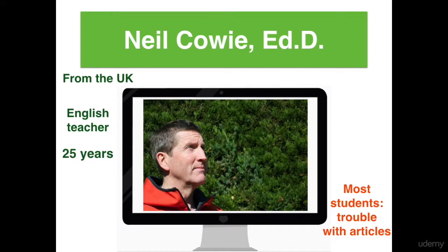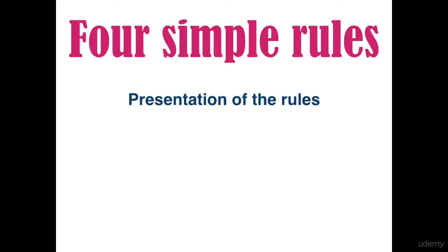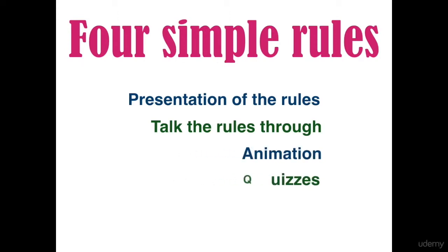So we hope that the materials in this course will help you make better informed choices about what article goes with what noun. In this course, we will present four main rules about article use. In order to make them as accessible as possible, we'll present the rules in the simplest manner we can. We will talk through the rules to show the process of selecting the right articles. We'll insert animations and quizzes to check your understanding, and we'll also demonstrate the rules with various kinds of visual aids.